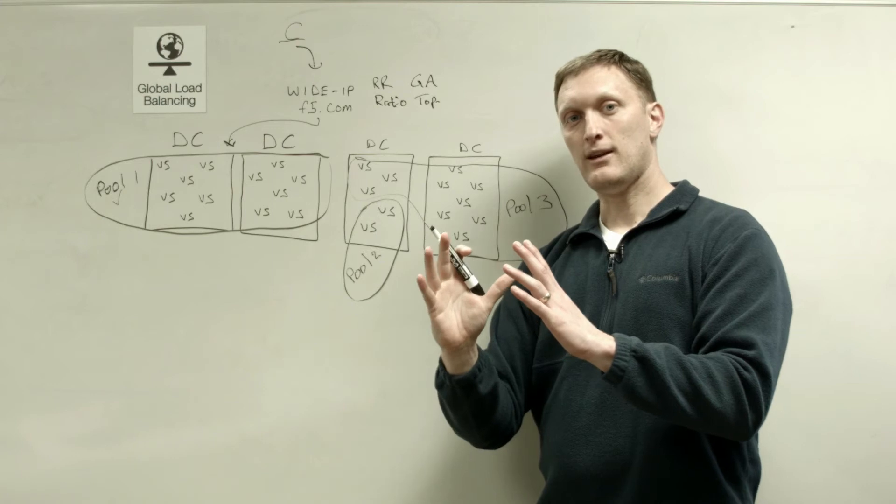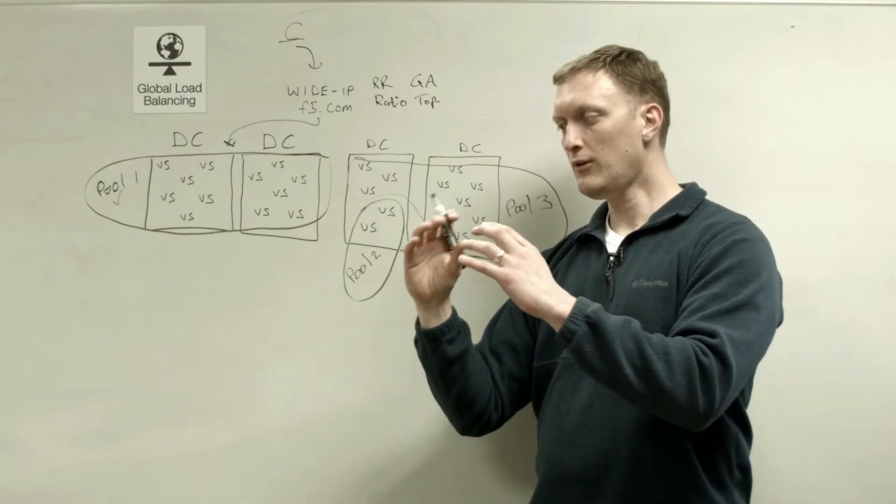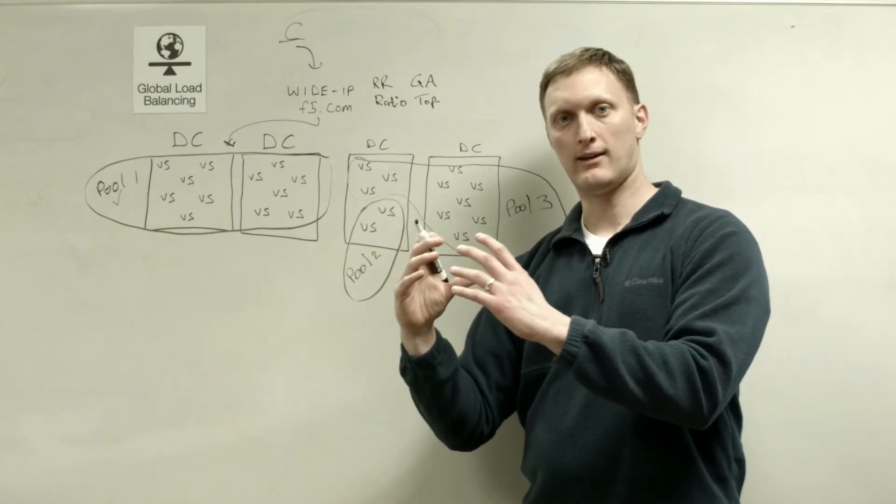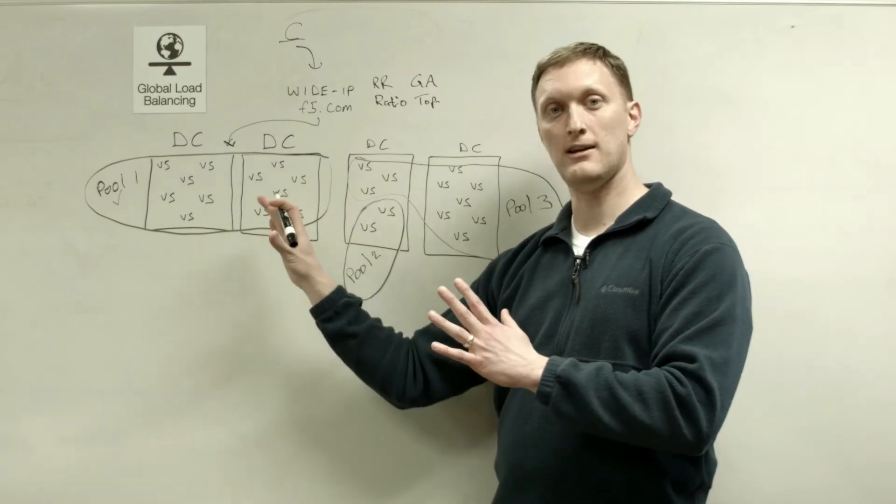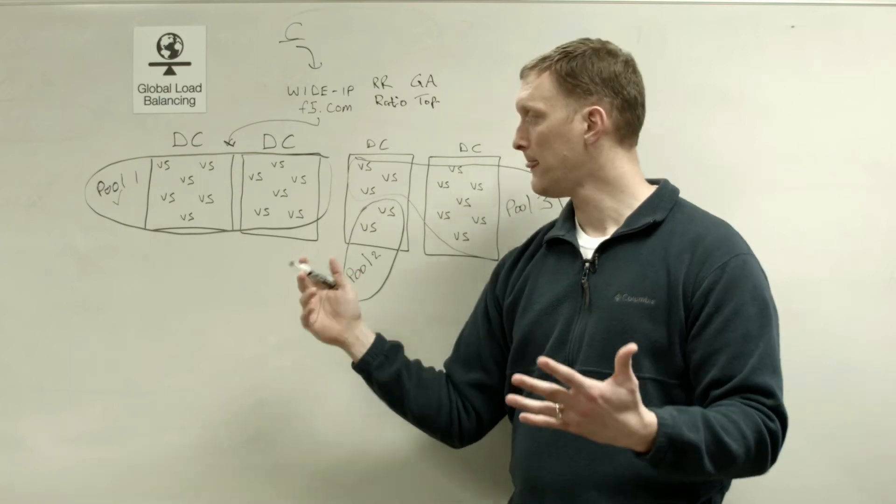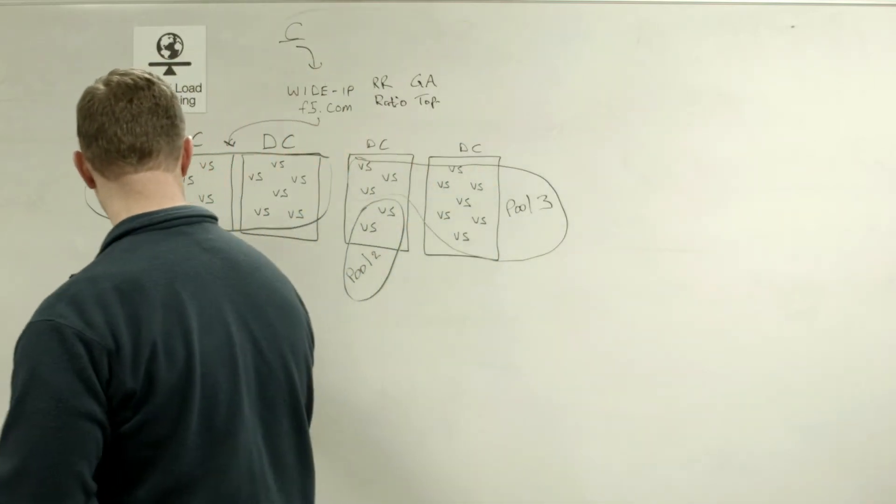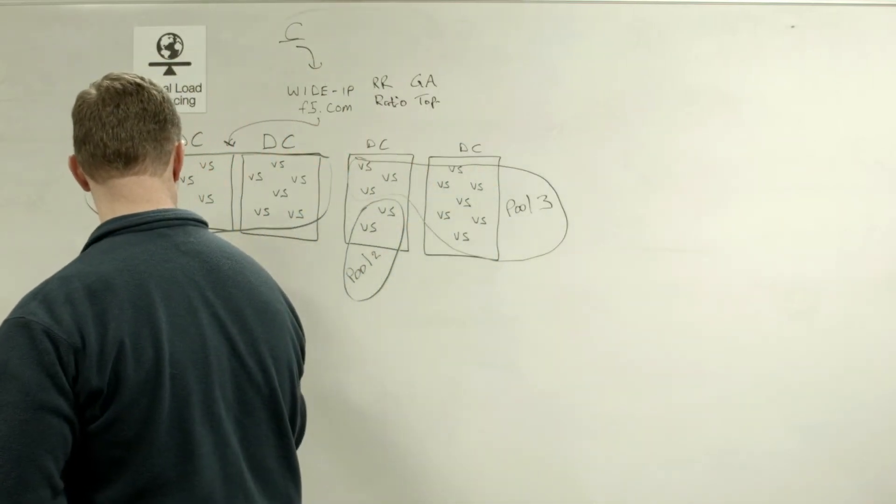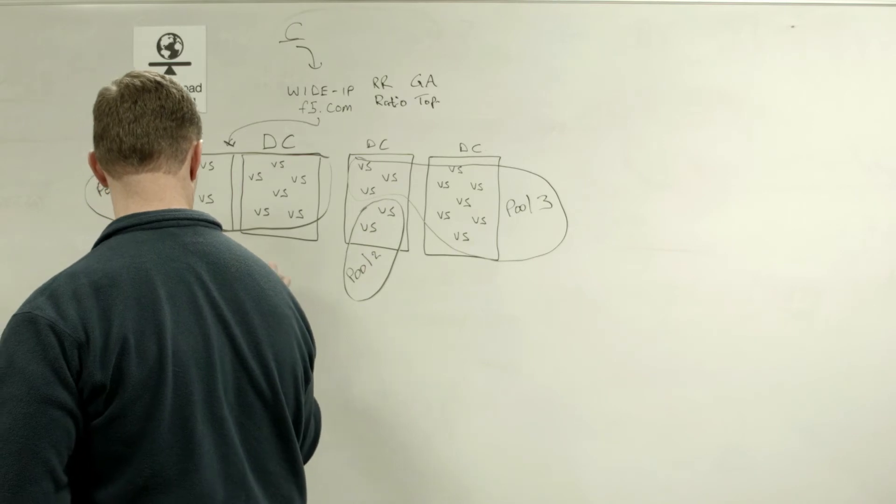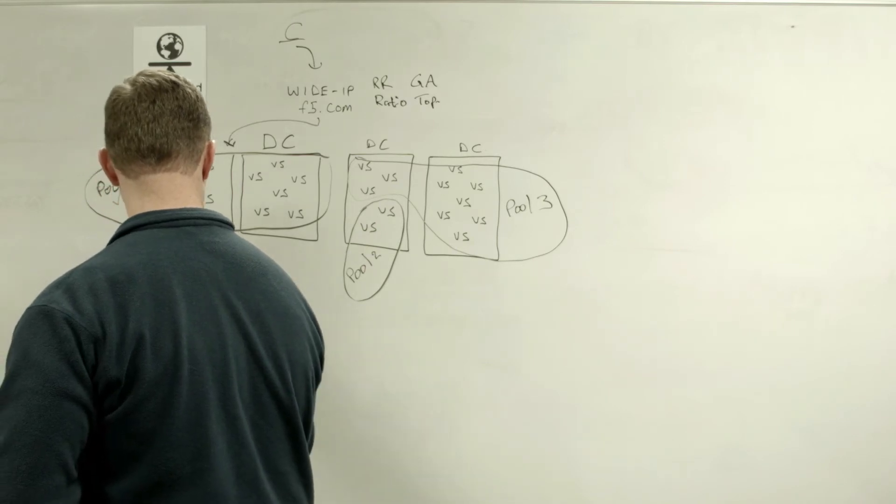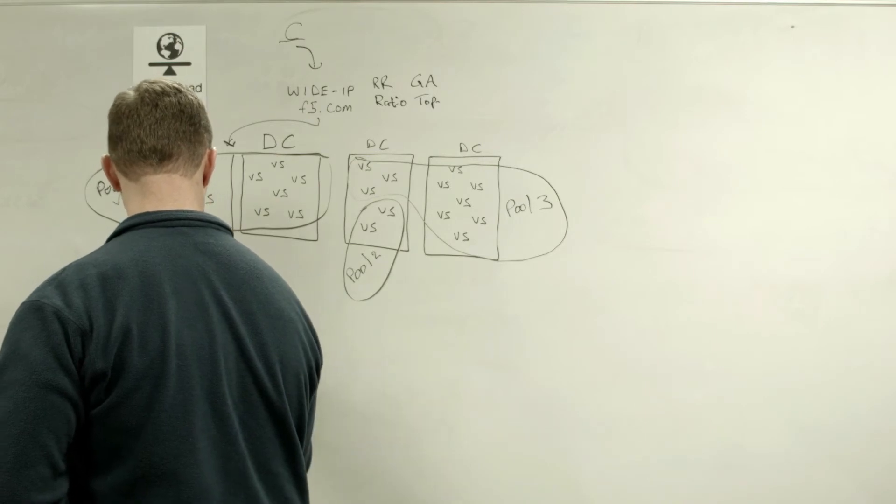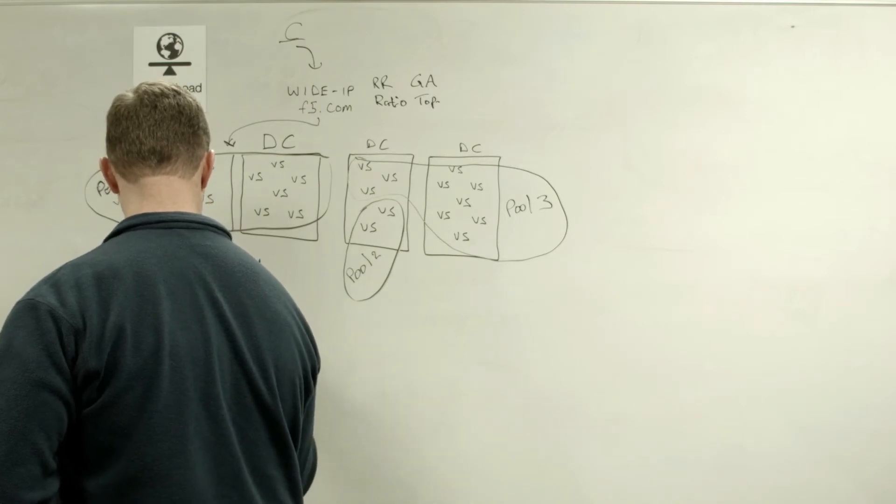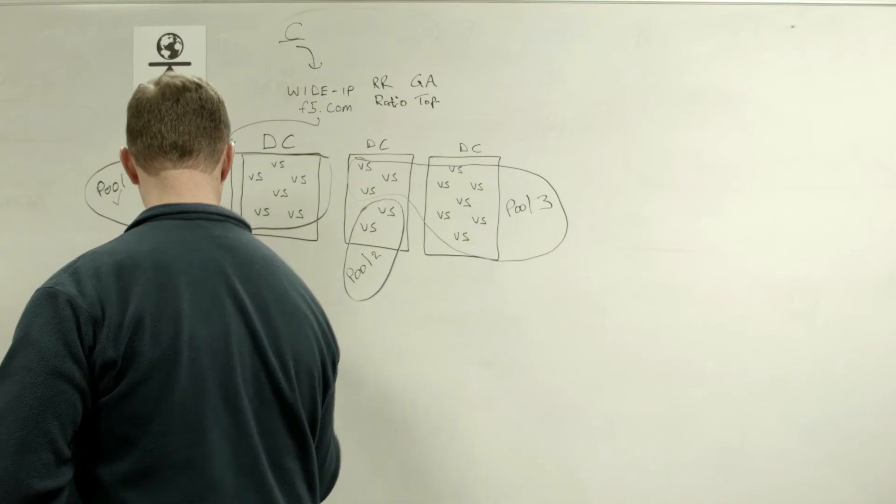If you're familiar with the LTM, you know that you identify one load balancing algorithm, and then that's the one that you use to select the different virtual servers. On the GTM, you actually get some different options. And so I'm going to write a couple of different things here. There's a preferred, preferred alternate and fallback load balancing options.